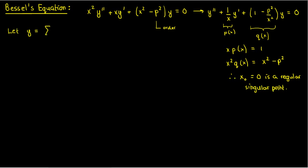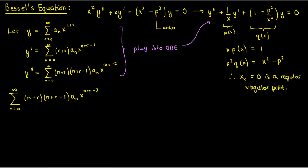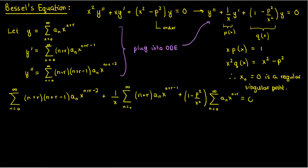We let y = sum from n = 0 to infinity of aₙ·x^(n+r). The first derivative is the sum of (n+r)·aₙ·x^(n+r-1), and differentiating again gives the second derivative. Plugging all of this into the differential equation, we get: the sum of (n+r)(n+r-1)·aₙ·x^(n+r-2), plus (1/x) times the sum of (n+r)·aₙ·x^(n+r-1), plus (1 - p²/x²) times the sum of aₙ·x^(n+r) equals zero.